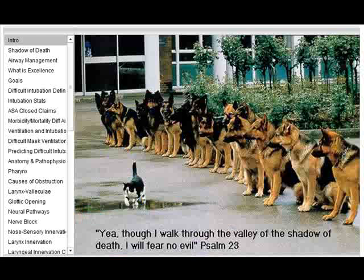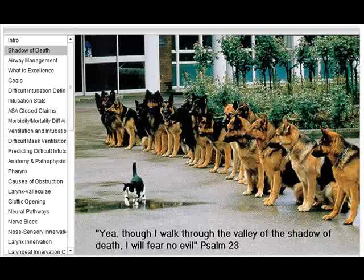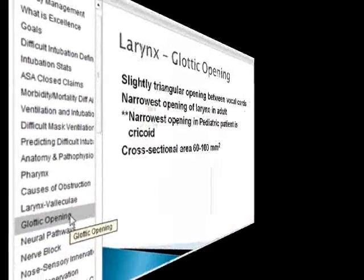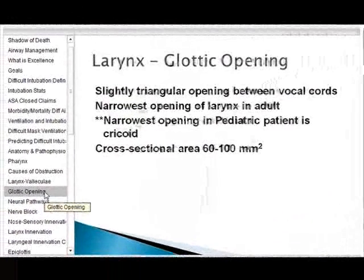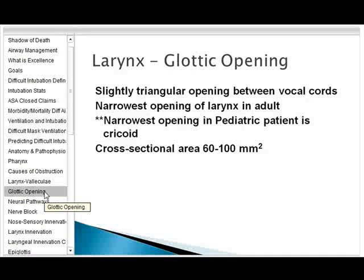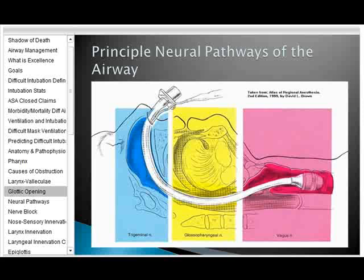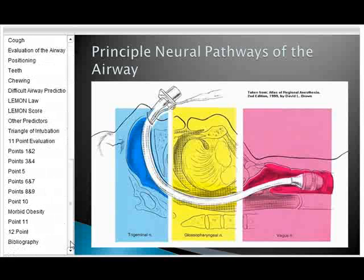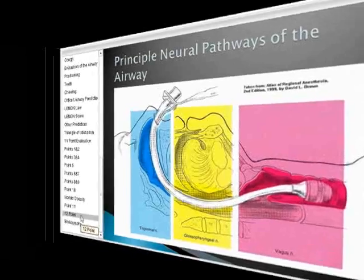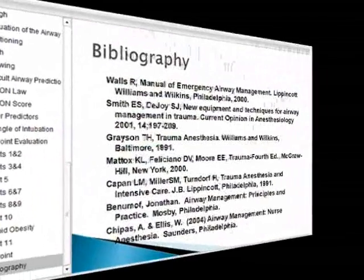Assessing the airway is so important for us. There are a lot of challenges, and you've got to have a lot of guts. The triangular opening between the vocal cords is the narrowest portion of the adult airway. In the pediatric patient, the area around the cricoid — called the conus elasticus — is the narrowest portion.